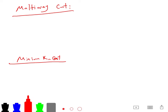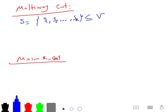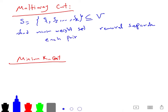By multi-way cut, I mean: given a set of terminals — S1, S2, ..., SK — we fix some terminals and find a minimum weight set of edges whose removal separates each pair of the terminals.